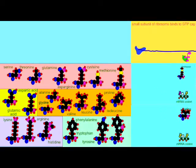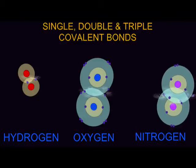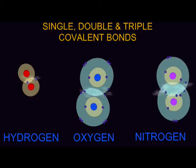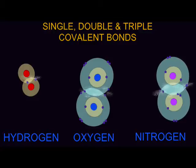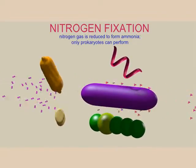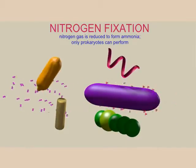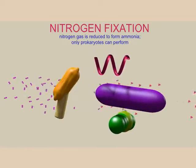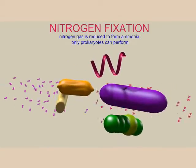Although nitrogen gas makes up 79% of the air we breathe, nitrogen molecules are composed of two nitrogen atoms bound by triple covalent bonds. Most organisms, including ourselves, lack the ability to break this triple covalent bond and therefore cannot use this abundant nitrogen. In fact, only bacteria can do this, performing what is known as nitrogen fixation, where they convert atmospheric nitrogen into ammonia, where it can now be used by living things.